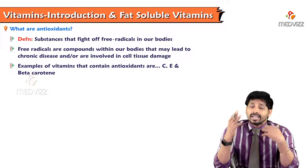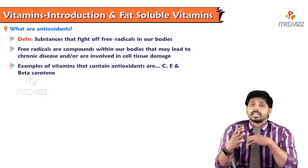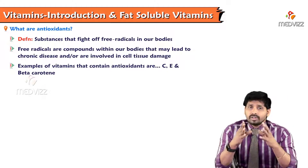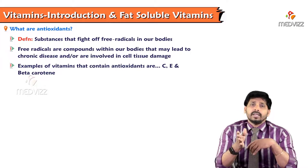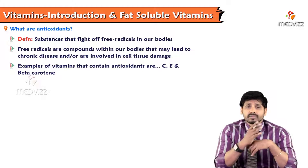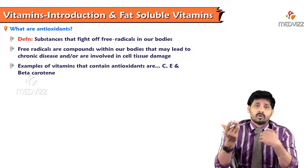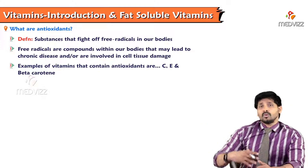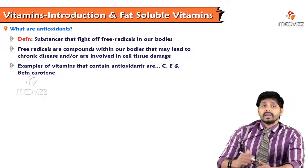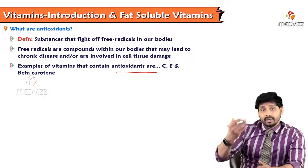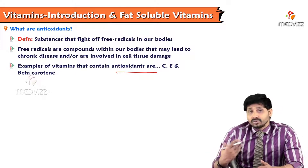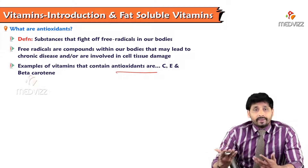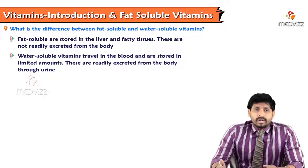Antioxidants are substances that fight free radicals, which are oxidants in our body. Free radicals are compounds forming from nascent oxygen that escapes the electron transport chain — oxygen consumed is used at the ETC level, and some oxygen not completely utilized escapes and forms nascent oxygen, generating free radicals. Free radicals also come from smoking and pollution. The main antioxidant vitamins are vitamin C (ascorbic acid), vitamin E (tocopherols), and beta-carotene from vitamin A.